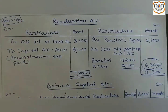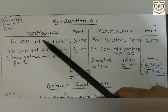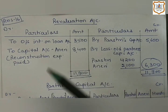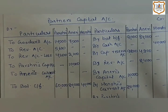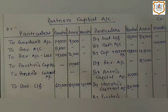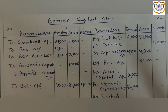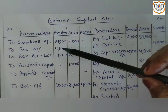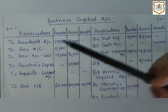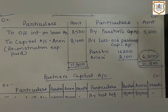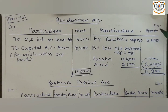As this liability is brought into the books, it is a loss for the firm, so it will be recorded on the debit side of the Revaluation Account. In the fourth point, personal expense of Parswee paid by the firm is debited to the Profit and Loss Account — 5,600. The firm will charge this expense from her Capital Account, so Parswee's Capital Account will be debited and Revaluation Account will be credited by 5,600.